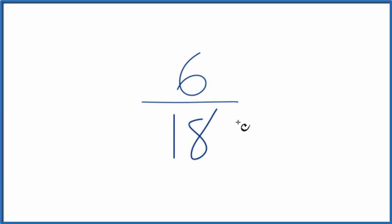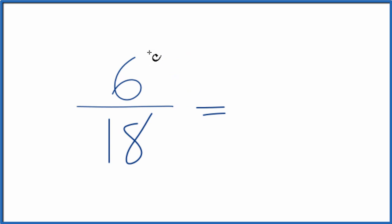Because 6 and 18 are even, let's just divide both of these by 2. 6 divided by 2 is 3. 18 divided by 2 is 9. So that's an equivalent fraction for 6 18ths.